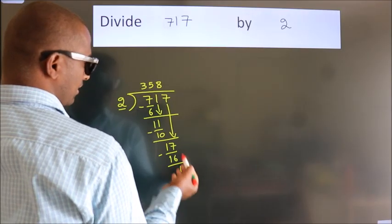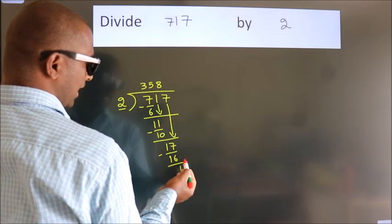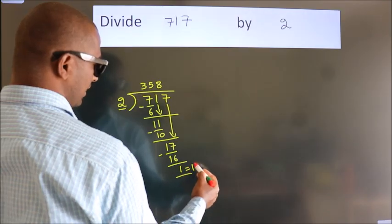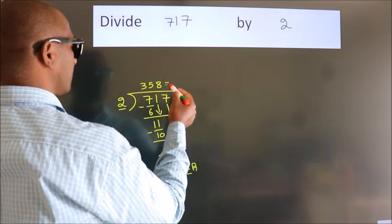After this, no more numbers to bring it down. So we stop here. This is our remainder. This is our quotient.